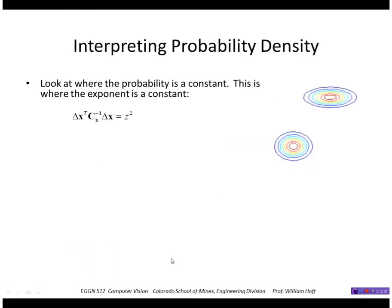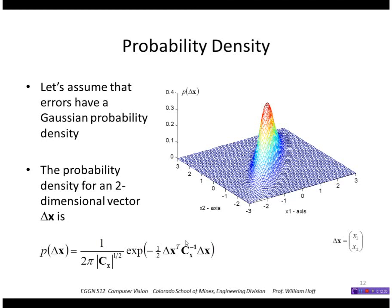And we can look now at the contours where the probability is constant. So imagine taking a level set, a plane here, and cutting this lump somewhere in its middle. So when p is a constant, basically the exponent, the value here in the exponent is a constant.